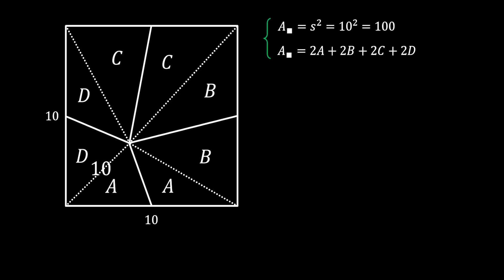So we can combine our two equations and get the following. Now you can see that we can simplify everything with 2, and we will get that the sum of the areas A, B, C, and D must be equal to 50.